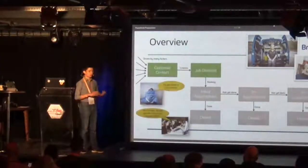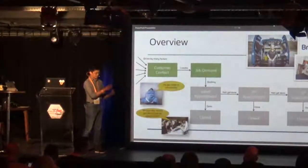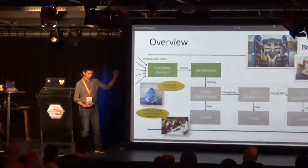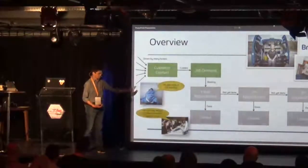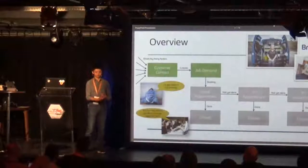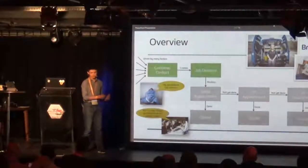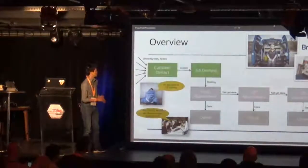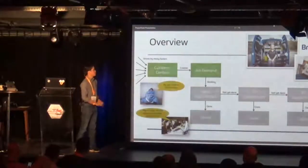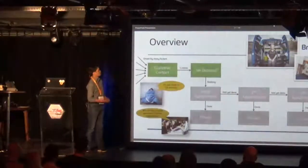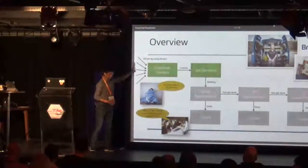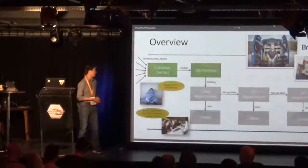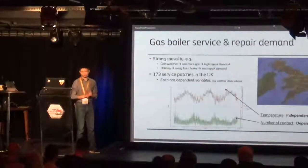It's clearly a very complicated problem because one job needs to be fulfilled by multiple appointments. For example, one job can be fixed by an initial appointment — done, closed. But some jobs are more complicated: the engineer needs to return to the property a second time, or even a third appointment, and so on. In this five-minute lightning talk, I'm going to cover only the first part of this forecasting process: how much the demand would be, defined by the number of jobs.